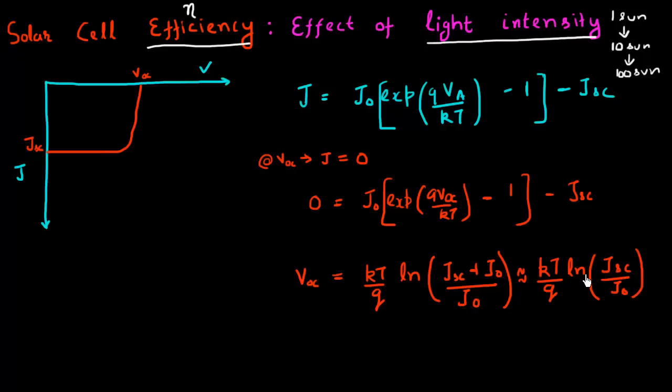So now what would happen when I increase the concentration of my light? So let me consider the case where I increase the concentration and make it 2x. So if I increase the concentration by 2x, I can expect that my short circuit current will become 2x as well. So my short circuit current will become 2 JSC as well.